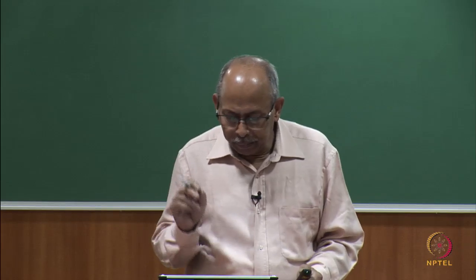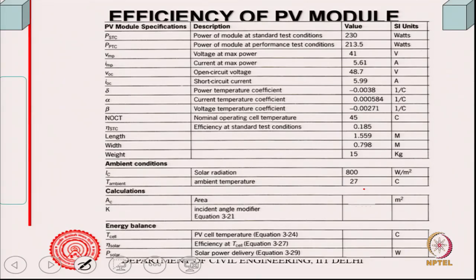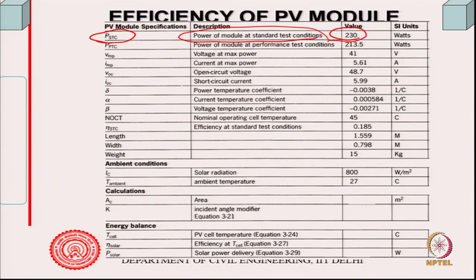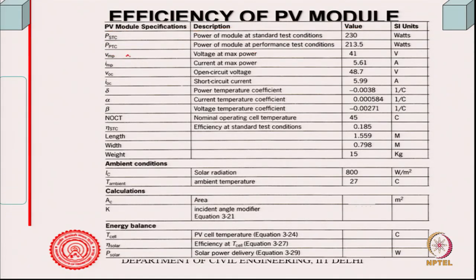Let us look into the example. This is what is specified — first of all, power under standard test condition. The value could be something like 230 watts, just for the sake of it. Then performance at standard test condition, but performance could also be checked at some other condition besides the standard test condition, as test condition may not be 800 W/m². Then we have voltage at maximum power, which is specified by the manufacturer.